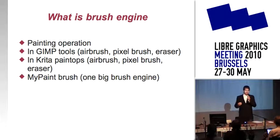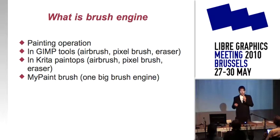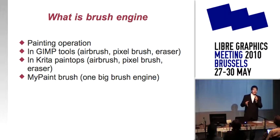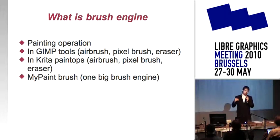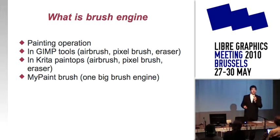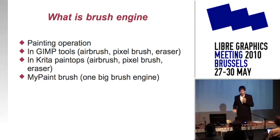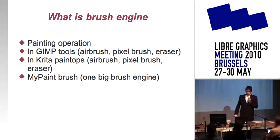Why is that so in Krita? Because in Krita we have tools — you can have freehand tool, line tool, rectangular tool, or ellipse tool — and you can use the painting operation with these tools. MyPaint has one big brush engine which creates every stroke.